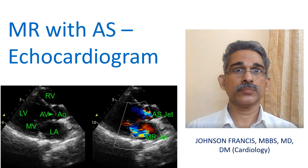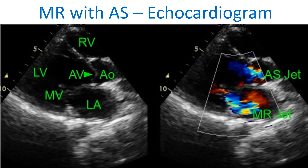Colored Doppler echocardiogram in parasternal long axis view showing jets of mitral regurgitation and aortic stenosis, both in systole.